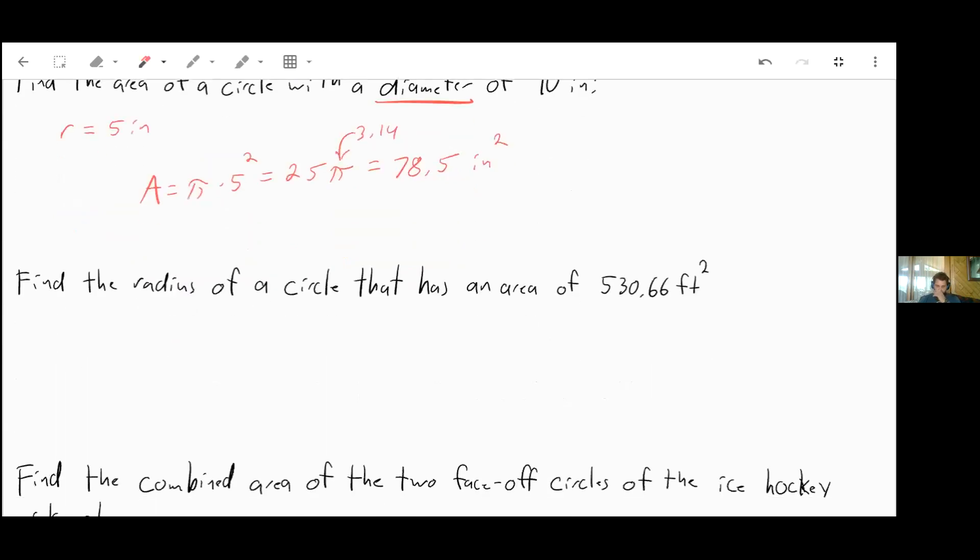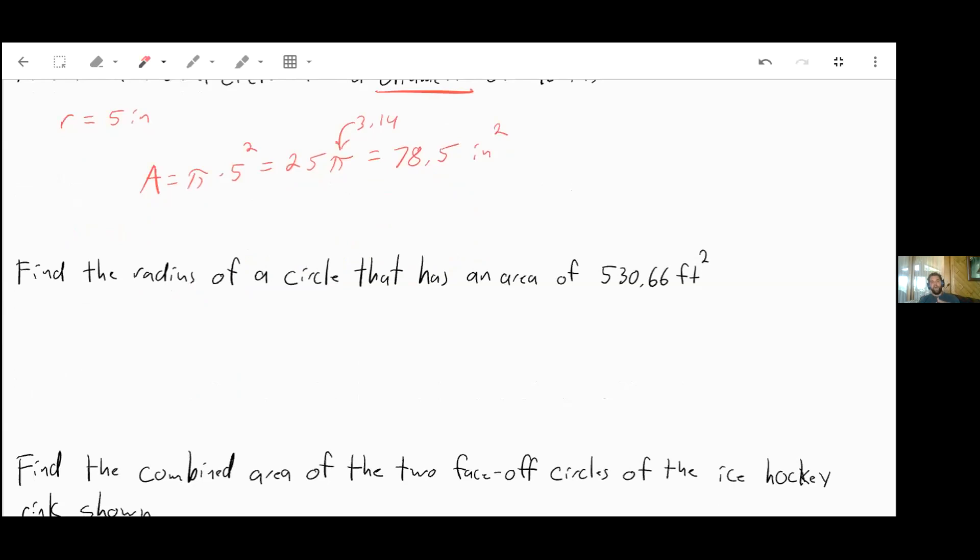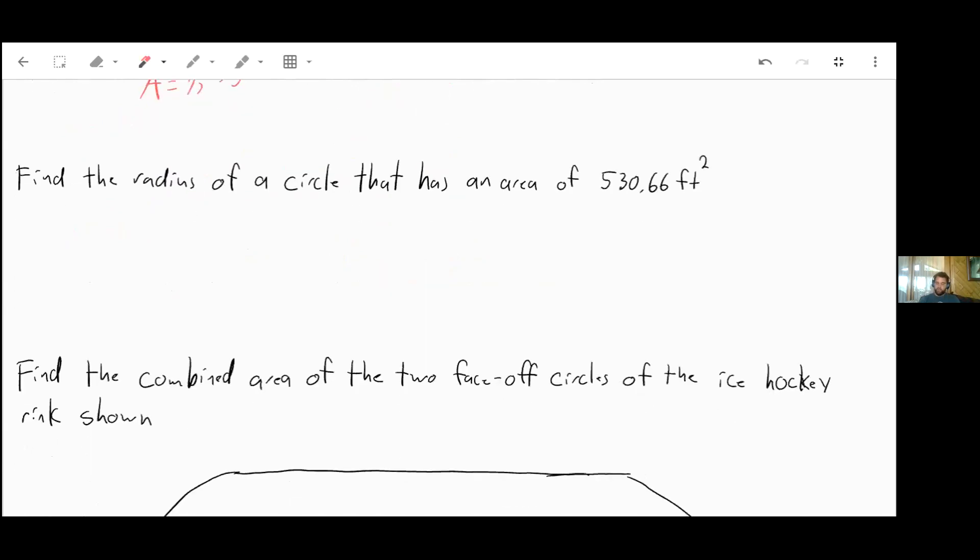Now, sometimes you might go from an area and have to work your way back to find the radius. So in this case, we have an area of a circle that is 530.66 feet squared. We know it's feet squared equals pi. So we'll just call it 3.14 times our radius squared. The reason I'm putting 3.14 in now is because it gives us something to divide by.